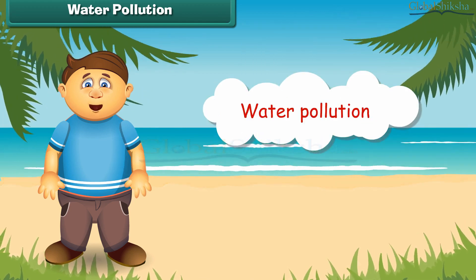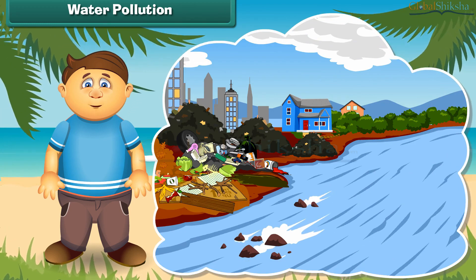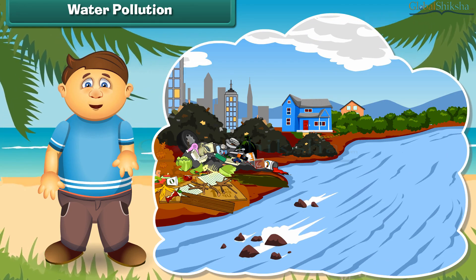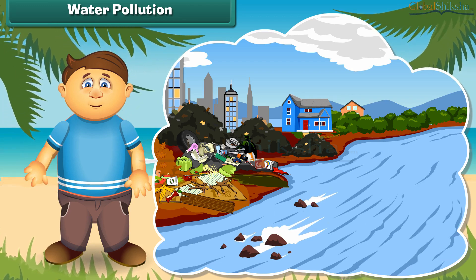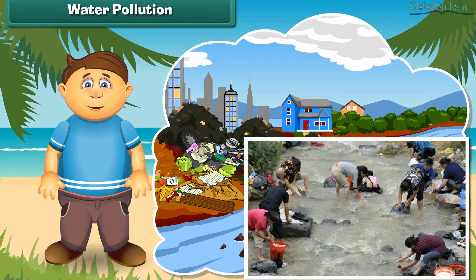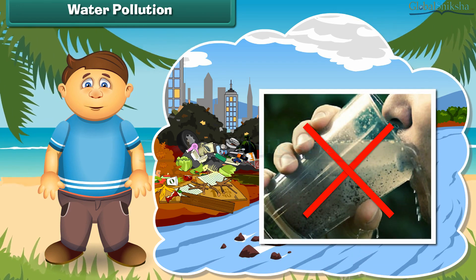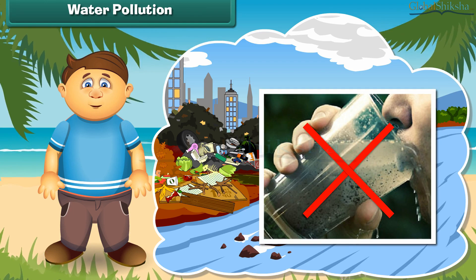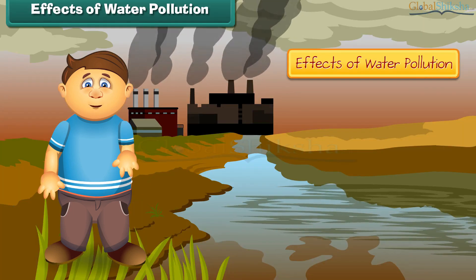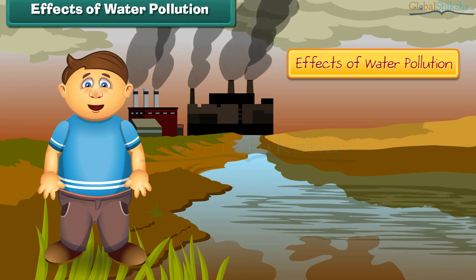Now let's know about water pollution. Like air, water also gets polluted. Look at this river — it is very dirty. It receives sewage from homes and wastes from factories. Some people also wash their clothes and throw waste into it. We should not drink this water, as it contains germs and may result in diseases.